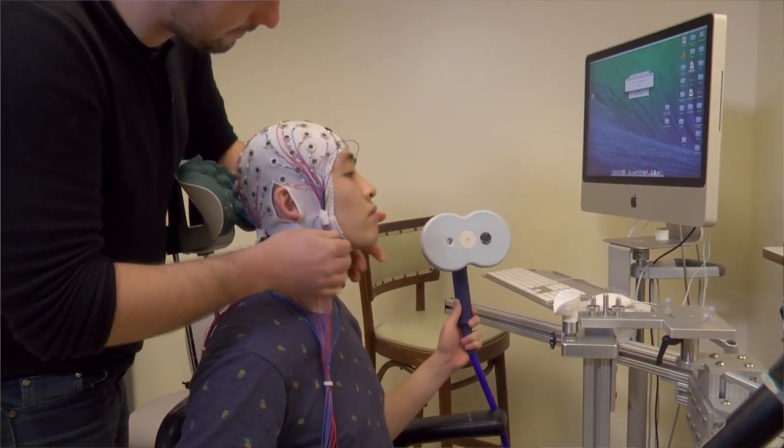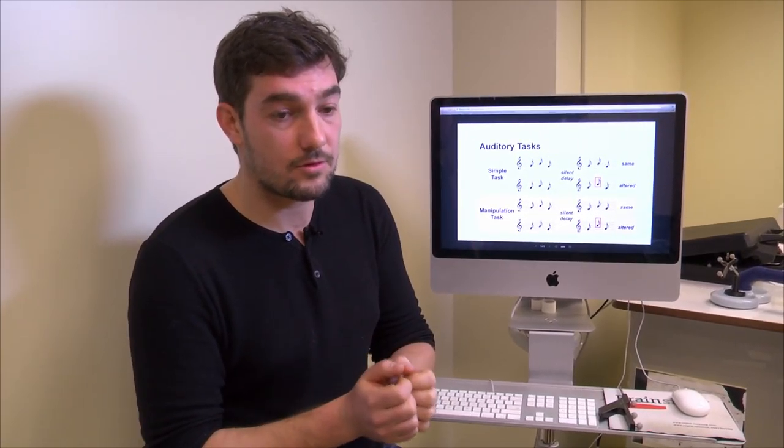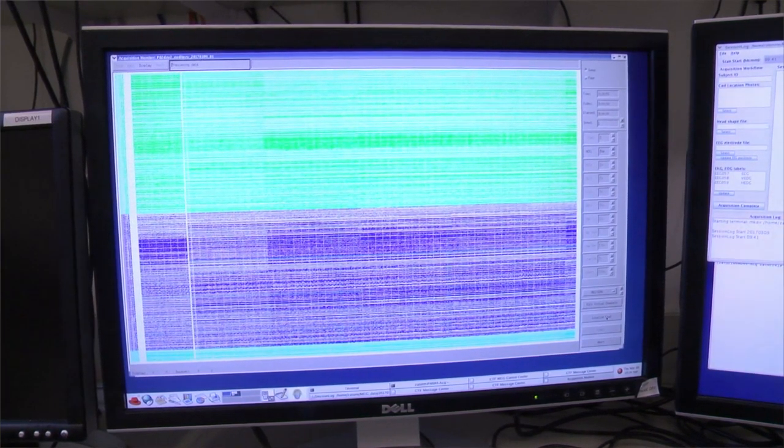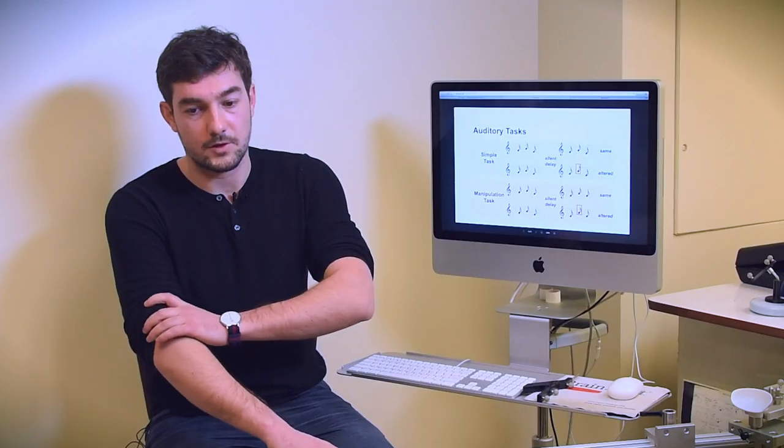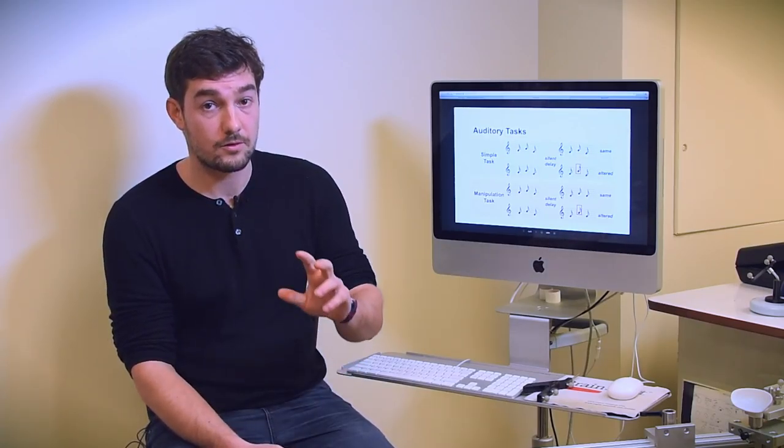In the first session, they were doing the MEG-EEG recording. By combining those two methods, we had access to the brain markers, the oscillations, but also the network of interest, where those oscillations emerge. To define the network of interest, we used two different tasks.